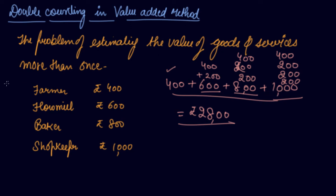Now let's see how many times we have considered the value of wheat. In this case: 1, 2, 3, and 4. The flour: one time this value addition, this and this. And the baker: this value addition and this value addition. So there is a problem of double counting.